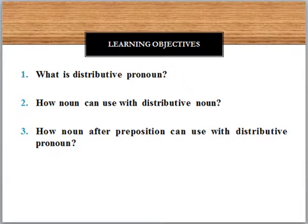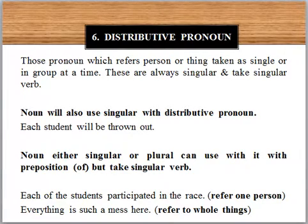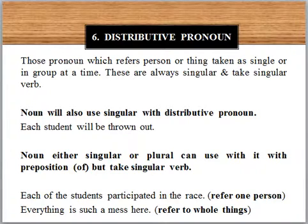Distributive pronouns are those pronouns which refer to a person or thing taken as single or in a group at a time. These are always singular and take a singular verb, meaning we always take a singular noun with a distributive pronoun. However, if we use a noun after a preposition, then it can be singular or plural, but a singular verb will be placed as we have a singular distributive pronoun.